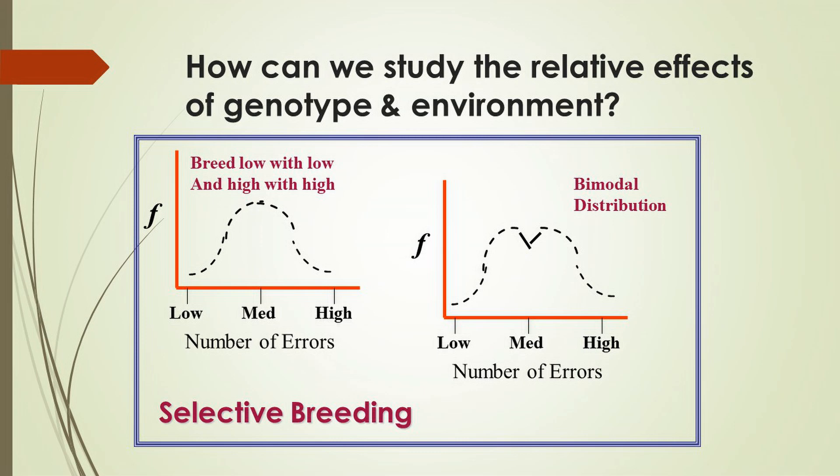To illustrate how this might be done, I'm going to present you with an experiment conducted years ago that I love just because it was botched. This was an experiment that turned out to have some serious problems, but it's a good illustration here. The researcher wanted to study the relative effects of environment and genetic inheritance on intelligence in rats.